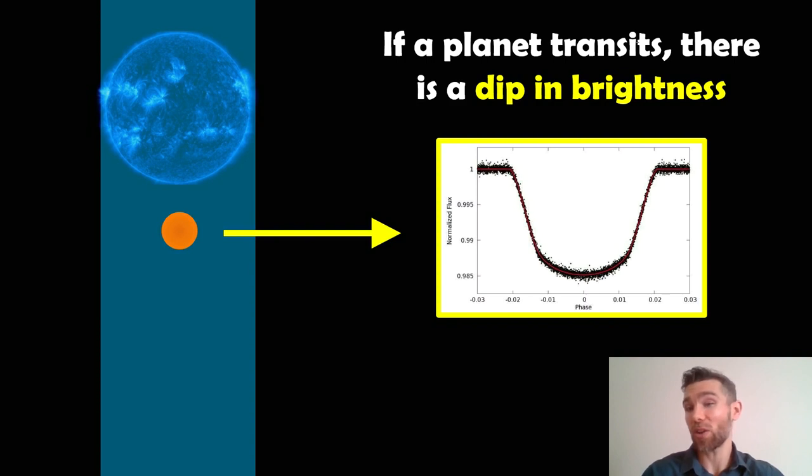If it's a binary star that actually looks slightly different, and if it's a different object it can look different as well. But a planet, you'd expect it to be this kind of symmetric U-shaped dip in brightness. It's a fairly straightforward mechanism to understand.